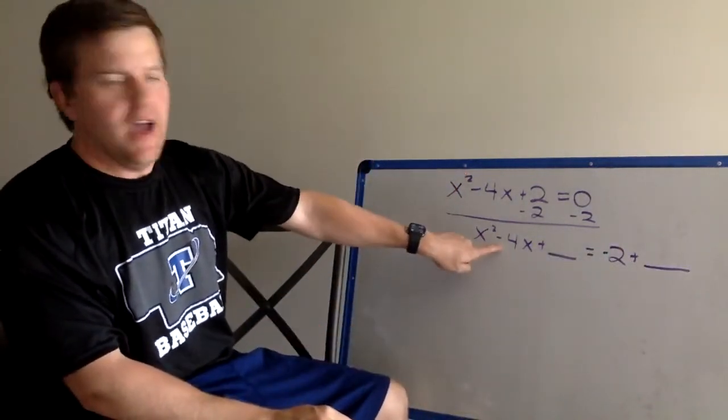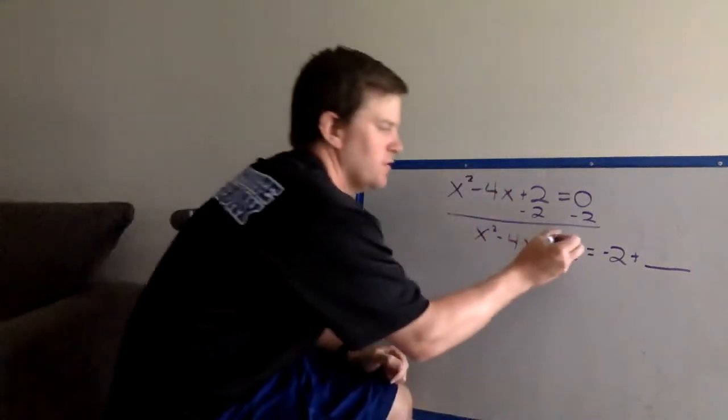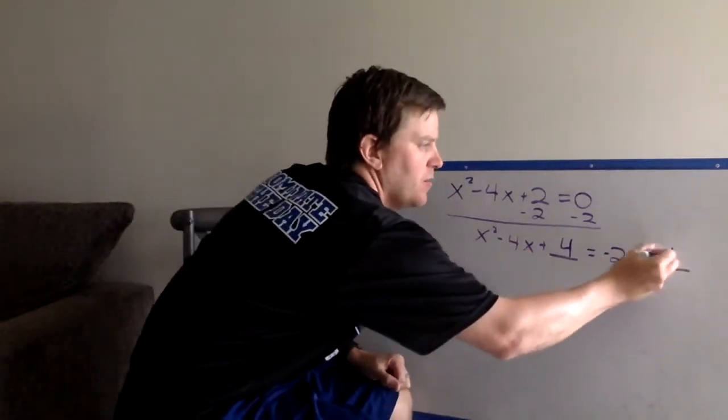Okay, our pattern. Half of b, half of negative 4 is negative 2. Square it. 2 squared is 4. If we add 4 over here, we have to add 4 over here to keep it balanced.